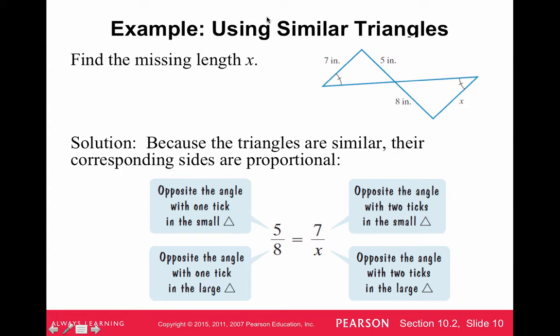Alright, so let's say we have these two triangles, you're told these two triangles are similar, which means that they have the same angles, but the lengths are different. So they're telling you that this angle here is the same as this angle here, and these angles here are equal, and these angles here are equal. That's what this little notation means.